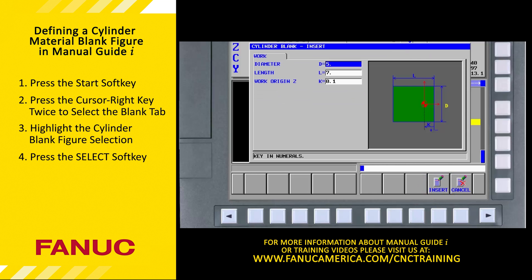You can see that there are three parameters to define a cylinder blank figure. The first parameter is the diameter of the blank — simply the diameter of the round bar stock that we will use. For our example, the diameter of the workpiece is 5 inches, so we enter 5.0 and press the Input key on the MDI panel.